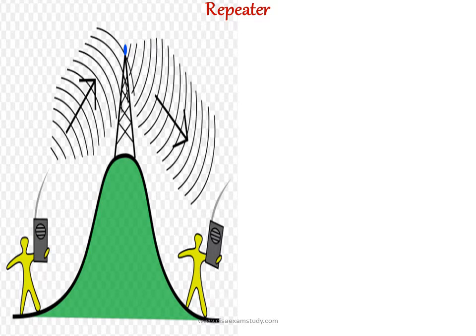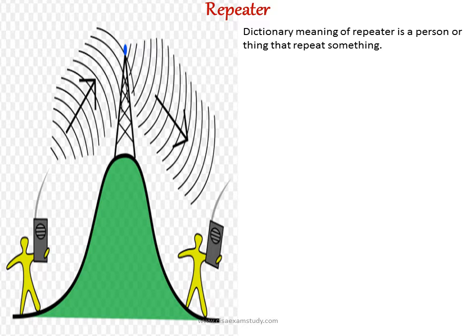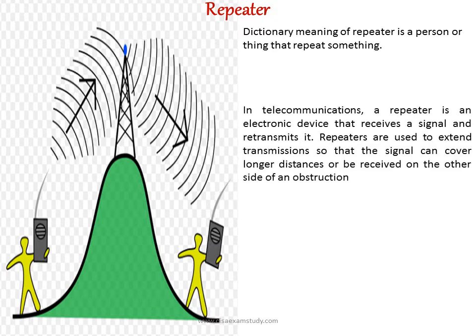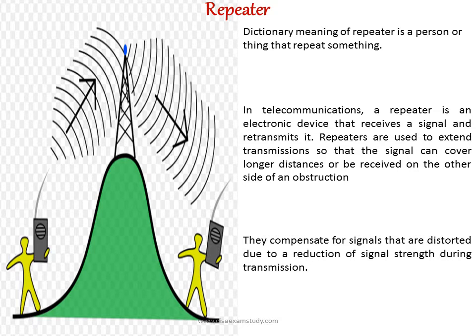Let us understand about the repeater. In dictionary terms, it is a person or thing that repeats something. In telecommunications, a repeater is an electronic device that receives a signal and retransmits it. They are used to extend transmissions so that the signal can cover longer distances or be received on the other side of an obstruction. They compensate for signals distorted due to reduction of signal strength during transmission.